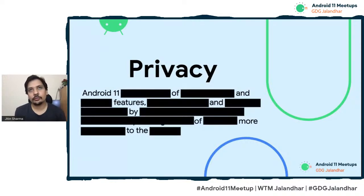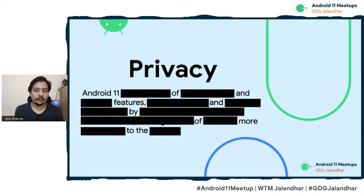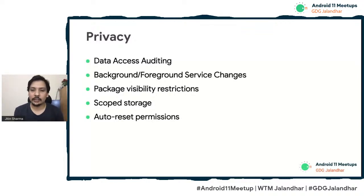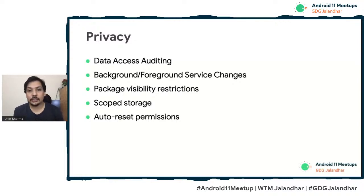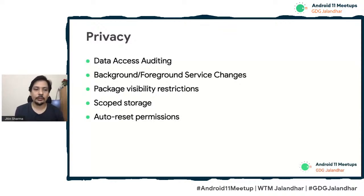Coming from Android 9 and 10, Android 11 has a lot added for privacy. Highlights include APIs for accessing what data your application is requesting, changes to foreground and background services especially around location, changes to package visibility, scoped storage, and a concept of auto-reset permissions. There is a dedicated session right after this one on how to adapt your apps to privacy changes by Sora Baroda, so stay tuned for that.